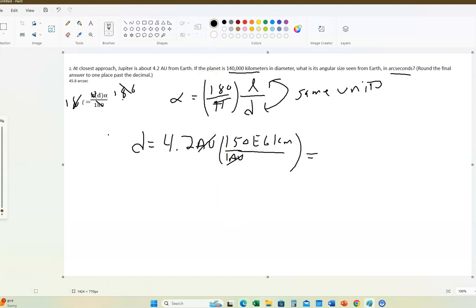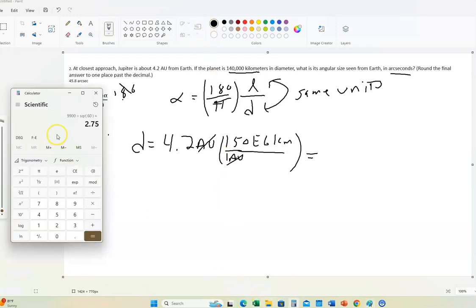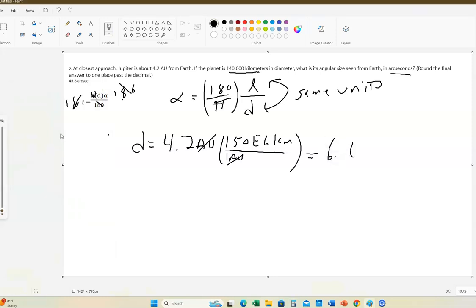Let me get my calculator here. 4.2 times 150 million, which is times 10 to the sixth. This is the distance. If I were to write this in scientific notation, there's three zeros, another three zeros, and then two more decimal places. So it's going to be 6.3 times 10 to the eighth, 6.3 times 10 to the eighth kilometers.